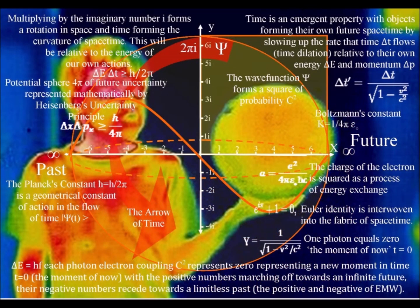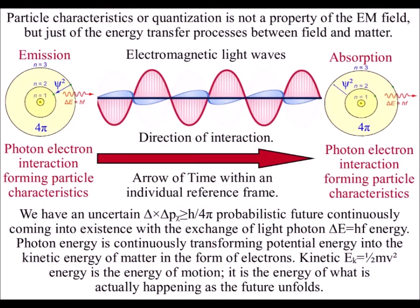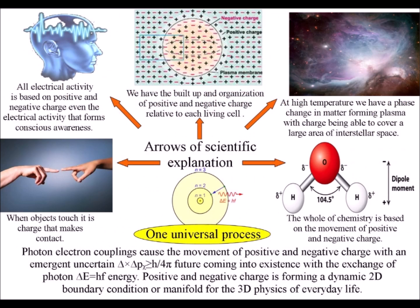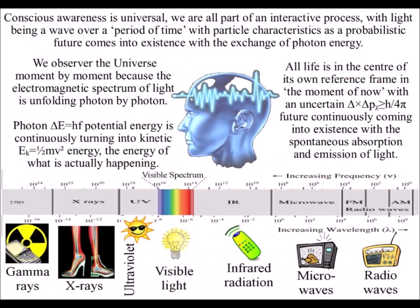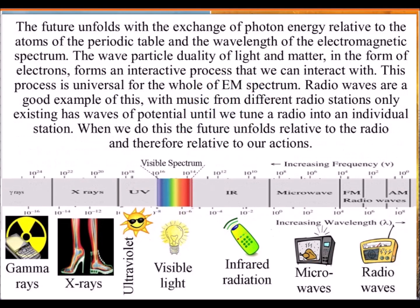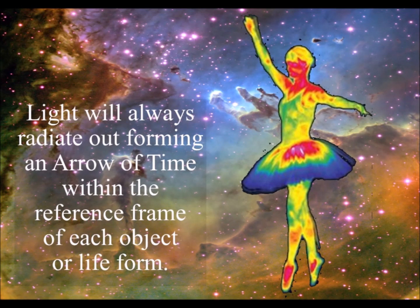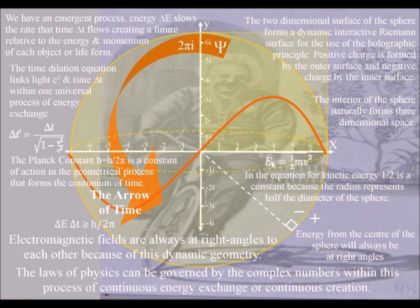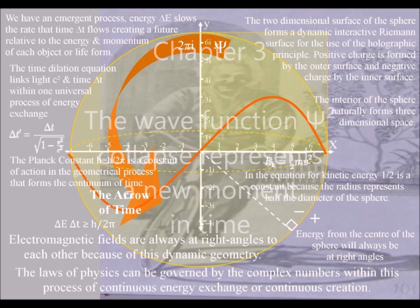Light photon energy is continuously transforming potential energy into the kinetic energy of matter in the form of electrons. Electromagnetic activity would be fundamental to how the brain produces consciousness, in a similar way to how electromagnetic waves are fundamental to how a radio produces music. The fact that light has momentum — and momentum is frame dependent — could give us a physical reason why conscious awareness is always at the centre of its own reference frame, in the moment of now, able to look back in time in all directions at the beauty of the stars.